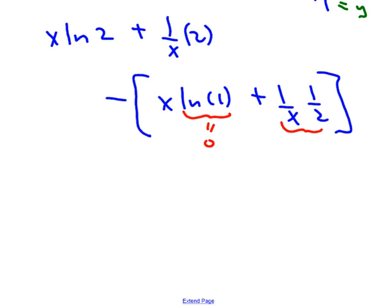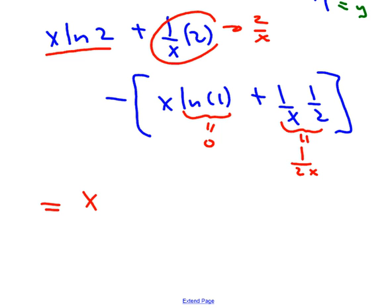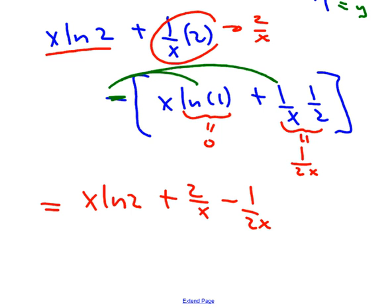This term can be written a little bit more compact. Maybe we can write that as 1 over 2x. This term can be written as 2 over x. And that first term doesn't mean as much to do with that. So this whole thing turns into x ln of 2. You're going to have plus 2 over x. And then you're going to have minus 1 over 2x. Don't forget, this is a negative interval. It distributes onto both different groups.